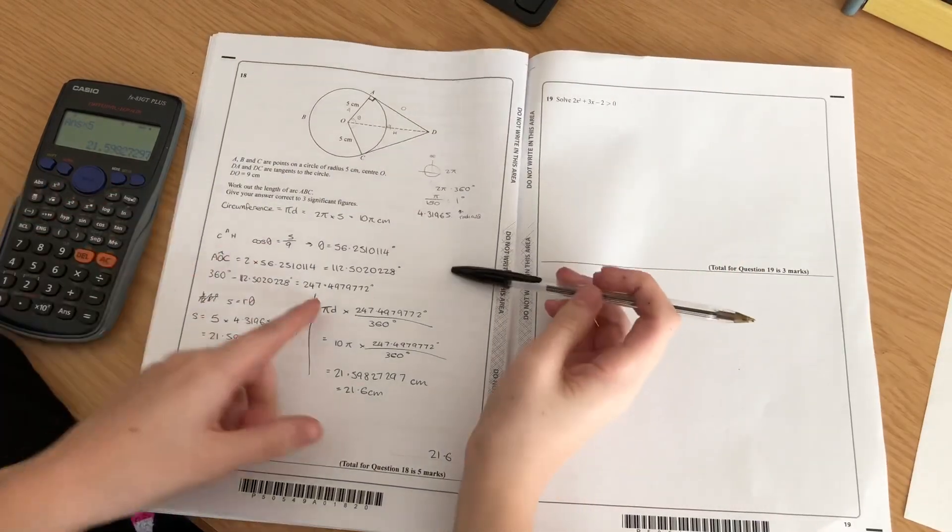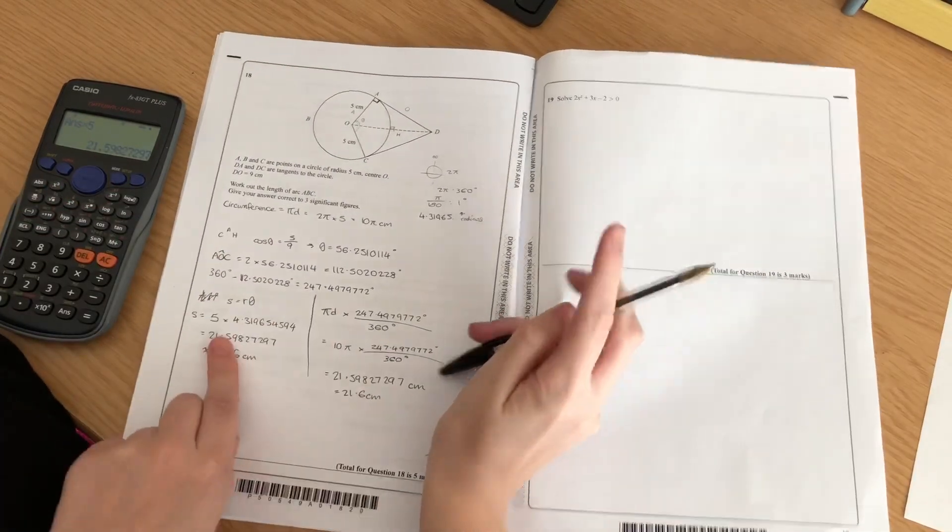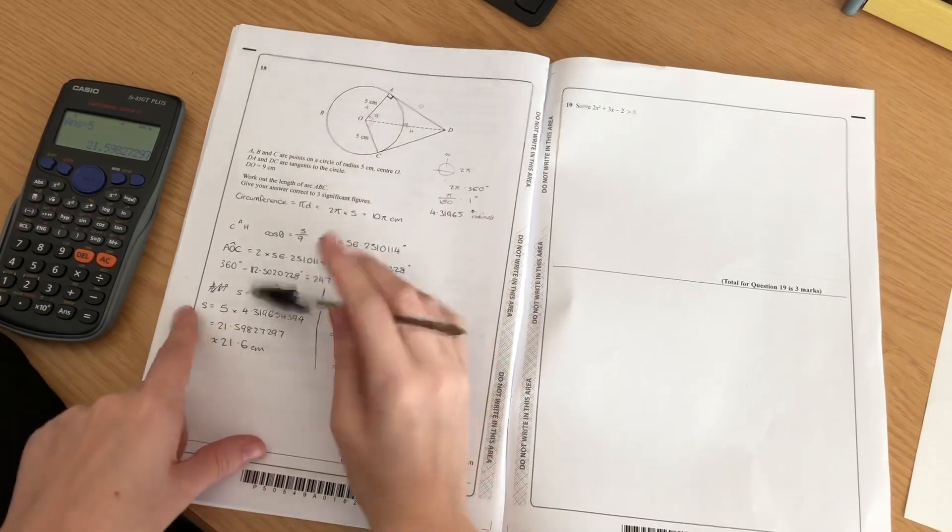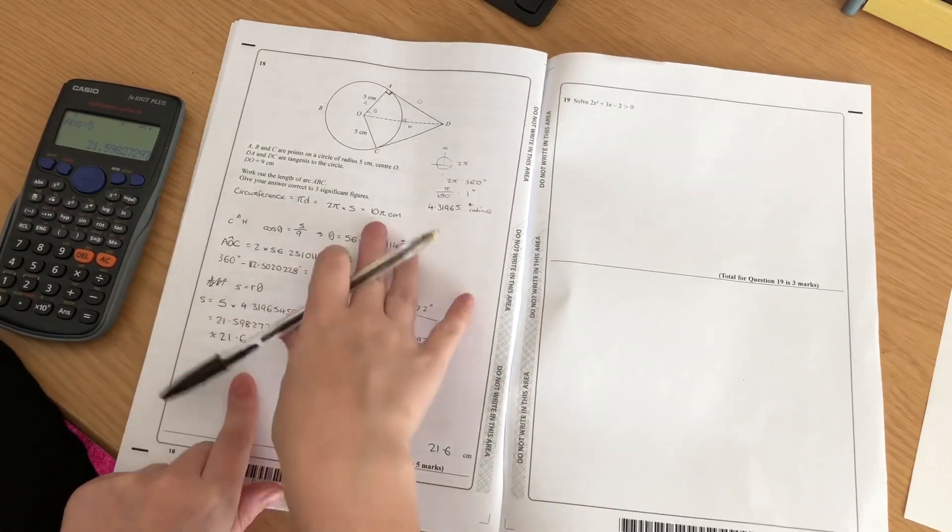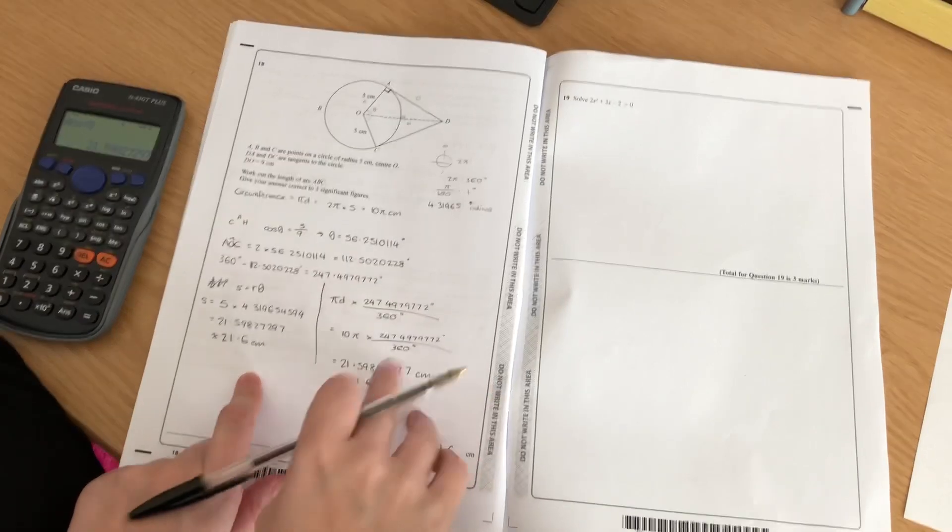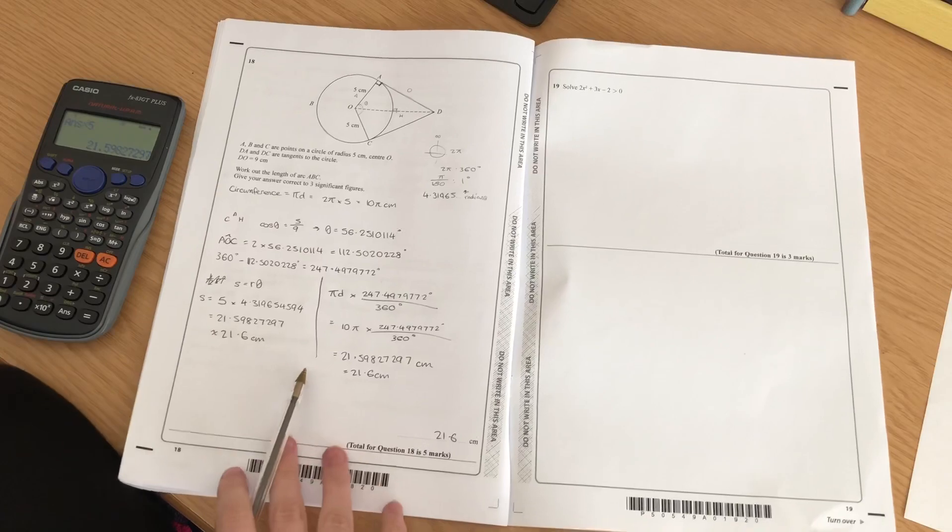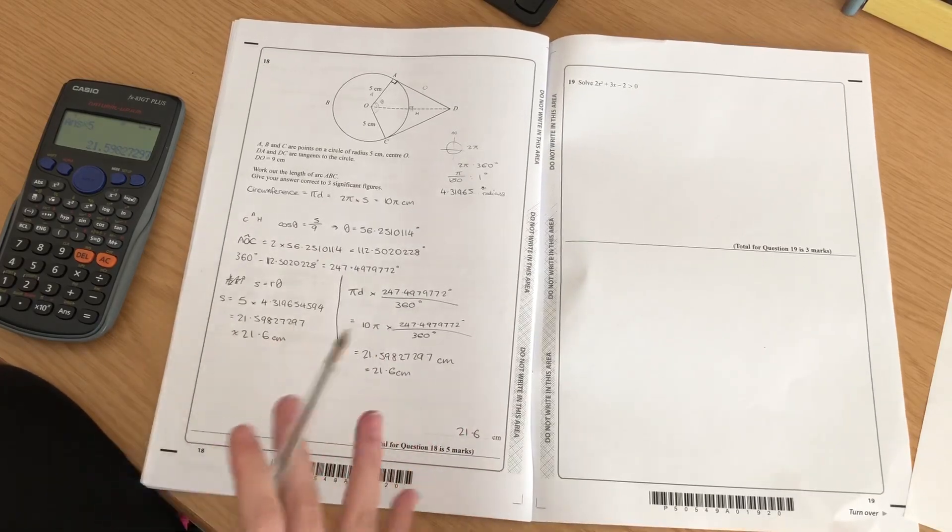Again, I really couldn't remember how to do this method, so I've had to do it two ways. I've had to convert to radians to work out this - so this is the way we would do it at A-Level - and then this is the way I think you'd do it at GCSE, using a fraction with degrees rather than using radians. But yeah, both methods have got me the same answer.